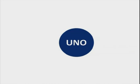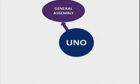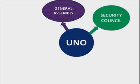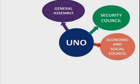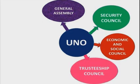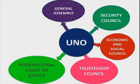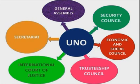We shall learn about the organs of the UNO. What are the organs of the UNO? They are: the General Assembly, the Security Council, the Economic and Social Council, the Trusteeship Council, the International Court of Justice, and the Secretariat.